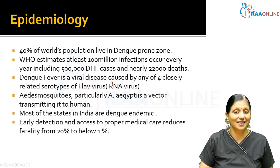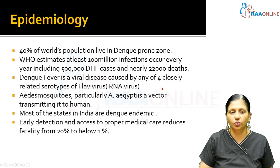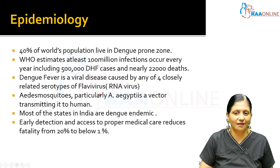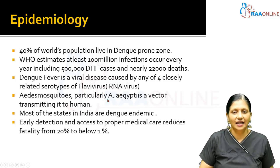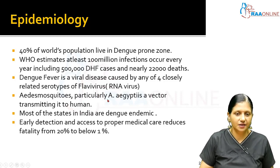Dengue fever is a viral disease caused by any of the four closely related serotypes of Flavivirus, which is an RNA virus. The Aedes mosquito, particularly Aedes aegypti, is the vector transmitting it to humans.